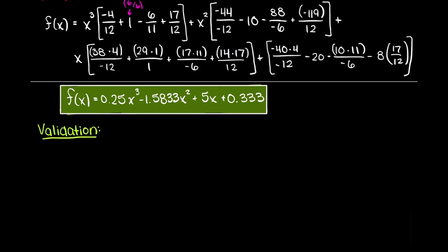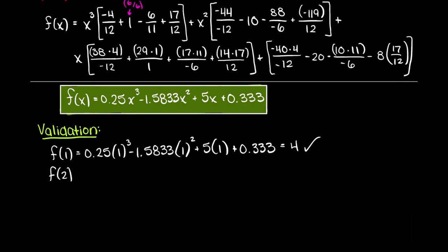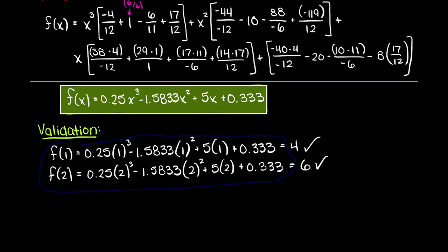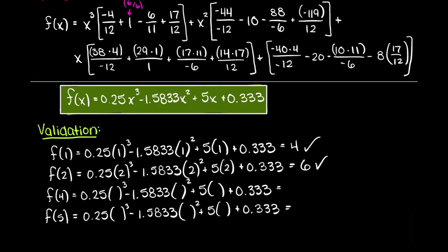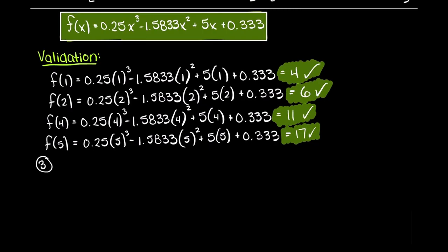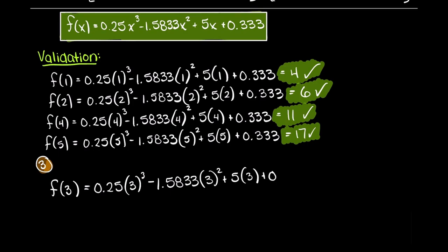If you want to do a quick check by plugging our x terms into our Lagrange polynomial, remember that when interpolating our function it needs to pass through all of our given data points. Therefore, by plugging in our x terms we need to get our y terms back. If we do not, that means we made a mistake in our calculations. As you can see, we are returned our outputs as expected. Lastly, we just need to plug in our input of 3 into our newly found Lagrange interpolation function. We receive an output of 7.833, which is the solution to the question we were asked.